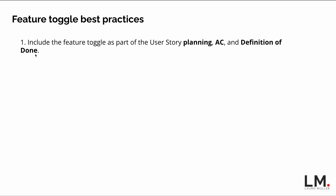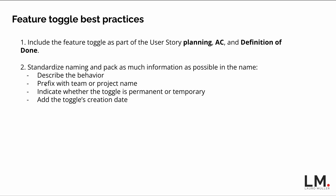Second best practice: standardize naming and pack as much information as possible into the toggle name. Describe the behavior, add the team managing the toggle — especially if different teams share the same codebase — and indicate whether the toggle is permanent or temporary. This helps identify old toggles: if it's marked permanent, you don't need to worry about removing it. You can also add the toggle's creation date to the name.